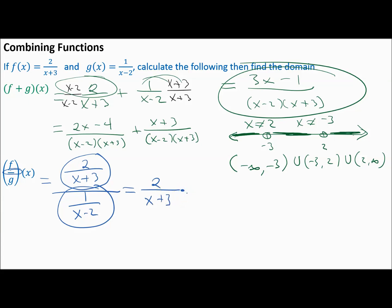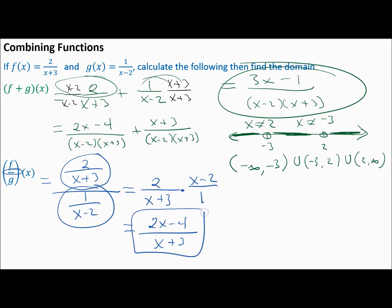So we have 2/(x plus 3) times (x minus 2)/1. You cannot cancel the x's across the addition or subtraction — those terms are married. The expression doesn't simplify further across factors. Distributing gives 2(x minus 2) over (x plus 3), which is 2x minus 4 over (x plus 3).